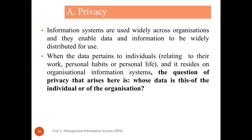Privacy of information is important when data relates to an individual — their work, personal habits, and personal life. There are two types of data: personal and official. Whenever data is related to a person's individual life, it should be secure. It resides on an organization's information system, and the question arises about privacy.